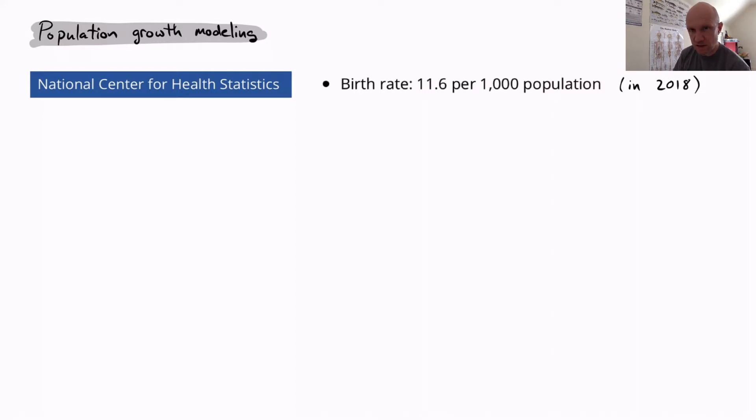So first of all, let's make a simplifying assumption so that we can think of this as not just a measurement for one year, but a measurement that would remain valid over multiple years so that we can use it to model population growth over multiple years. Let's imagine that this number 11.6 people per 1,000 people, that's true for every year. Of course it's going to change from year to year, but let's assume that it's the same.